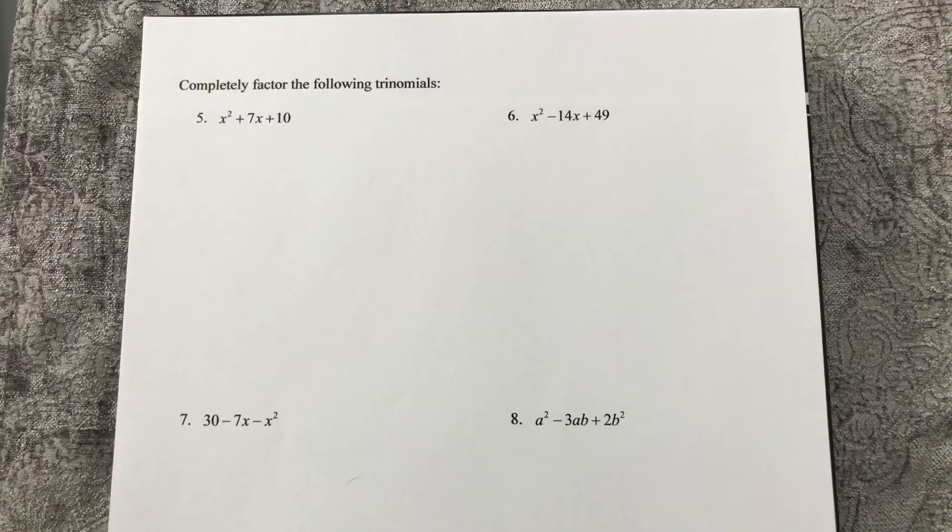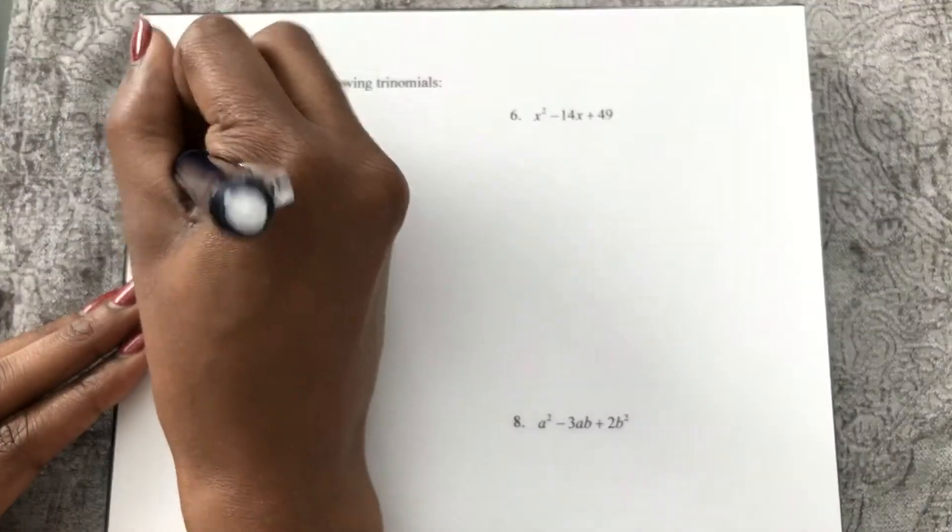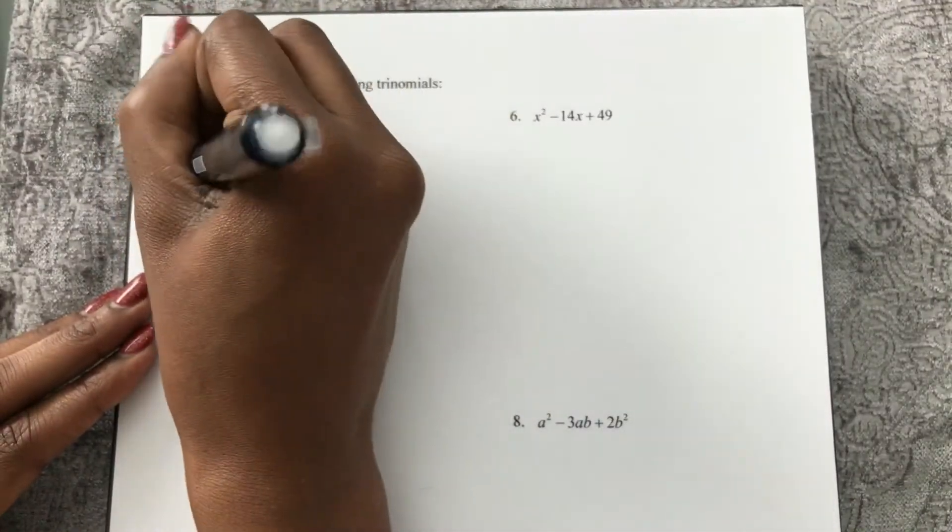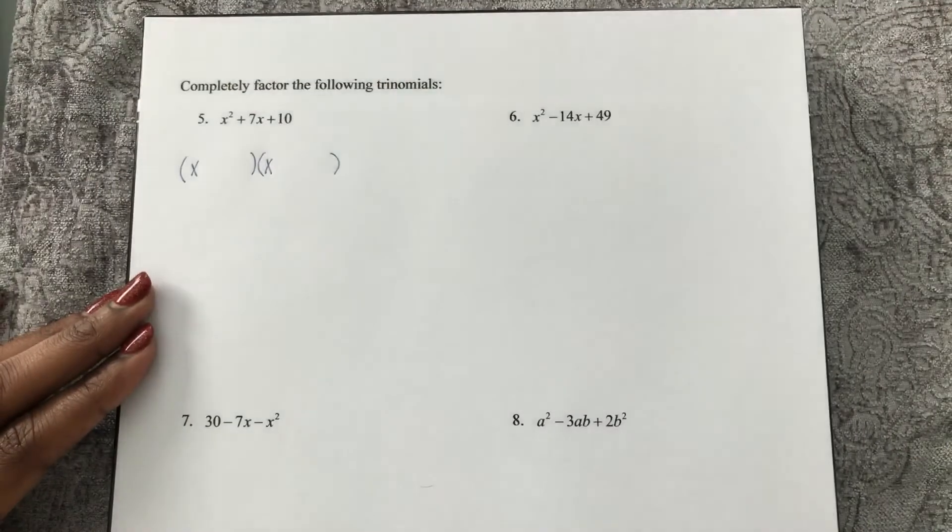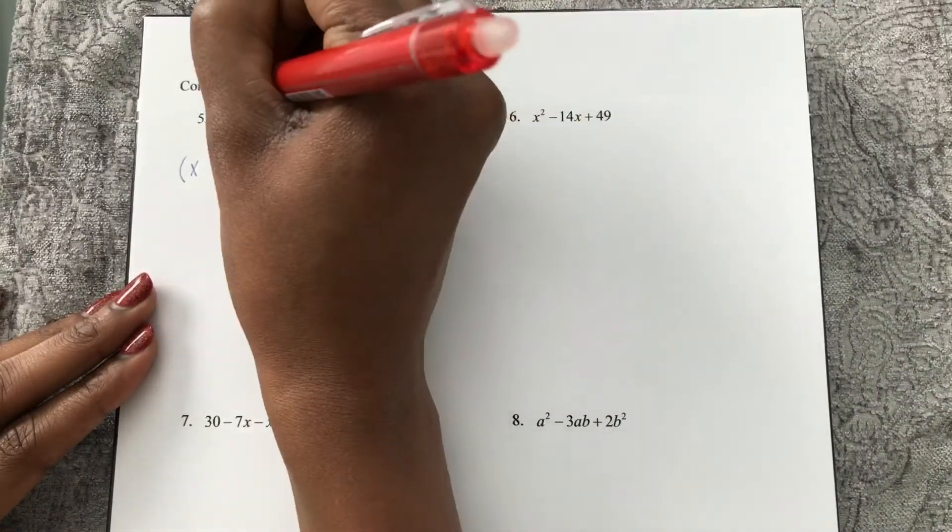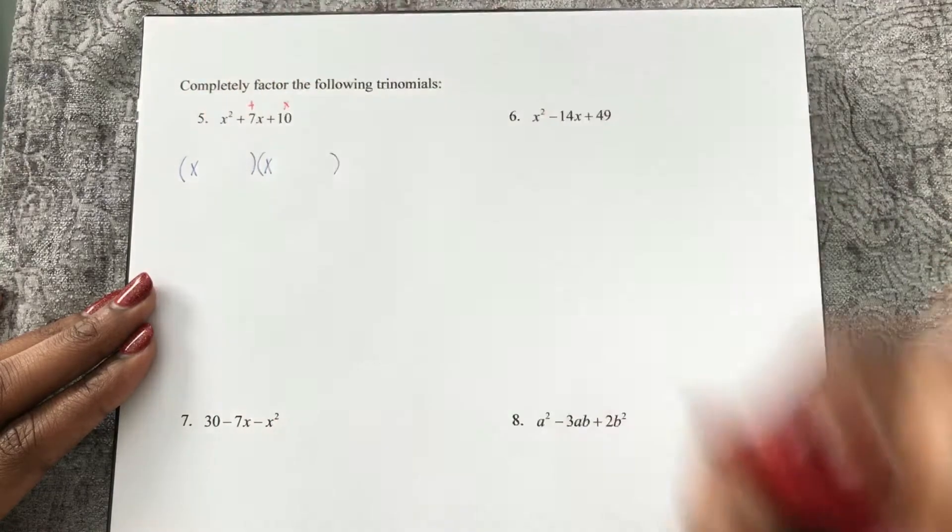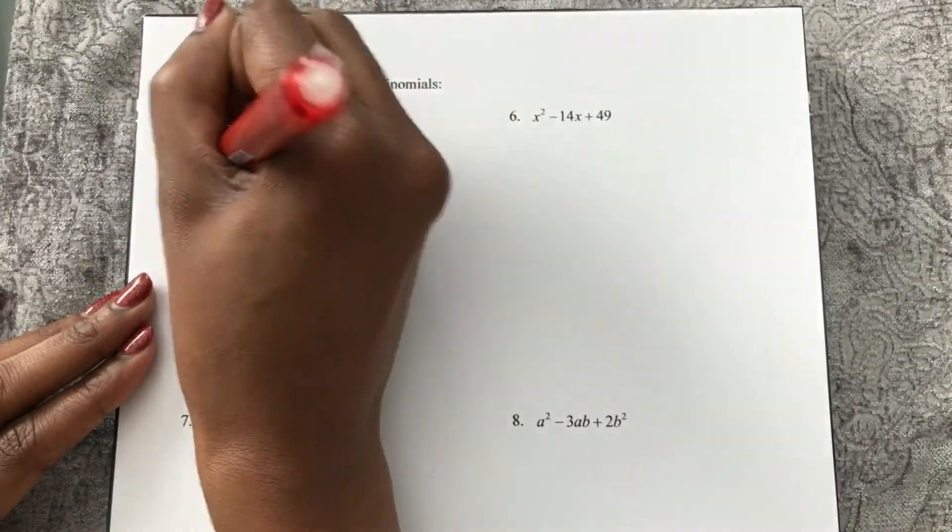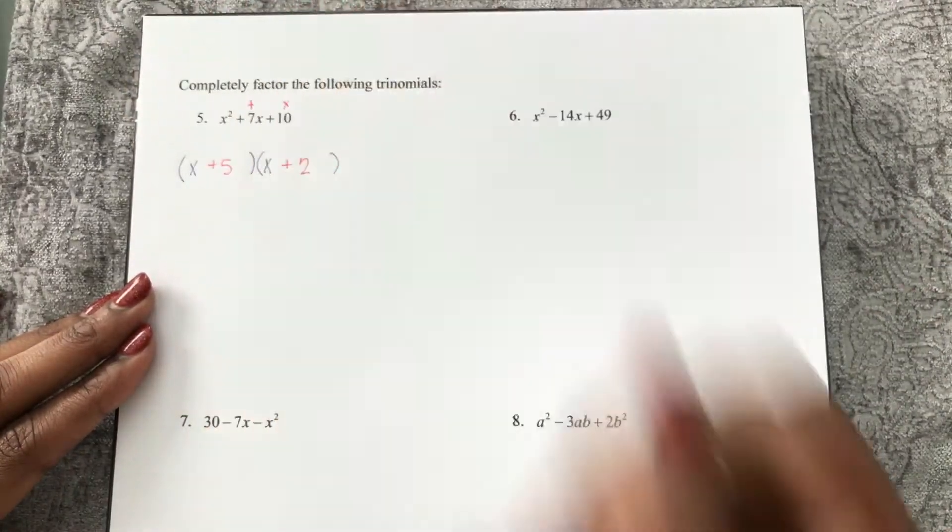Here on 6 and 7, these are much easier trinomials to factor because our leading coefficient is 1. So I already know it's going to be x multiplied by x. Now, I need two numbers that multiply to make 10 and add to make 7. Those numbers are 5 and 2. Done.